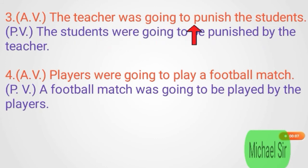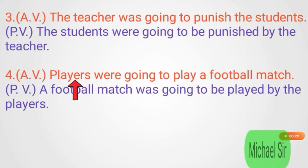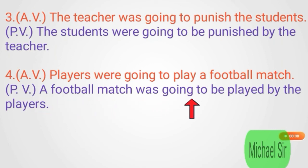Example three — Active voice: 'The teacher was going to punish the students.' Passive voice: 'The students were going to be punished by the teacher.' Example four — Active voice: 'Players were going to play a football match.' Passive voice: 'A football match was going to be played by the players.'